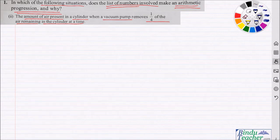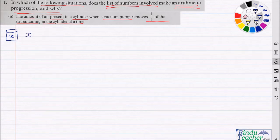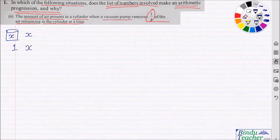With this, let's try and write down what we can understand. We know there is a cylinder, but we do not know what the amount of air in it is, so we will assume it is X. There is X amount of air in the cylinder initially. Now when the vacuum pump runs for the first time, it will remove one-fourth of the air remaining.